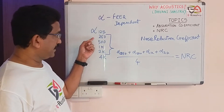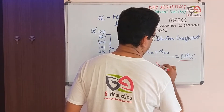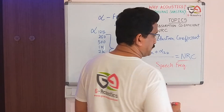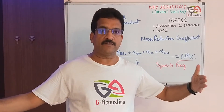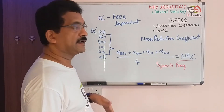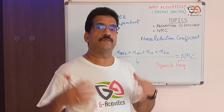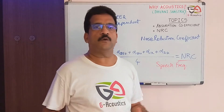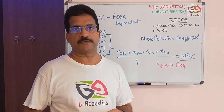These four frequencies are mostly the speech frequency range. For example, if a room is being used for a music band, music has a wide frequency range starting from 20 Hz to 20 kHz. So what about frequencies below 250 Hz and above 2 kHz? In those cases, the NRC value of a material is not really helpful when doing detailed room acoustics.